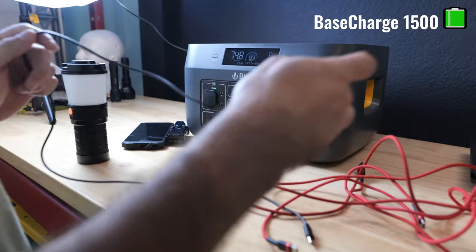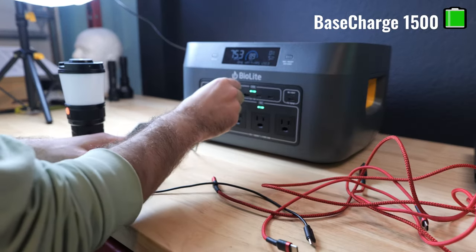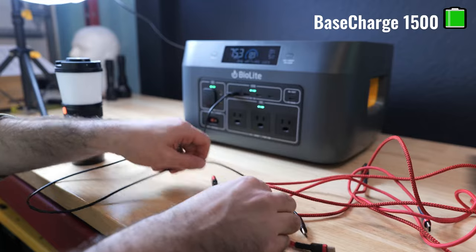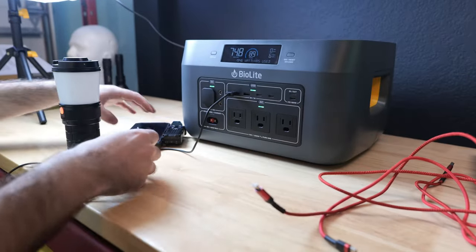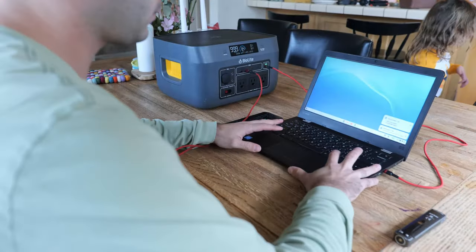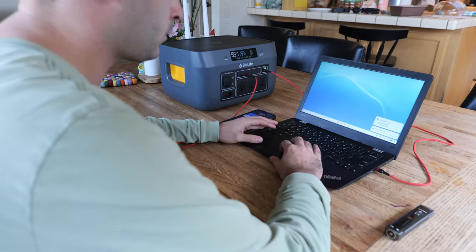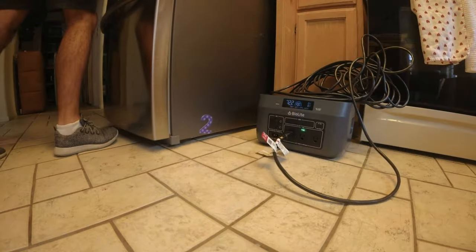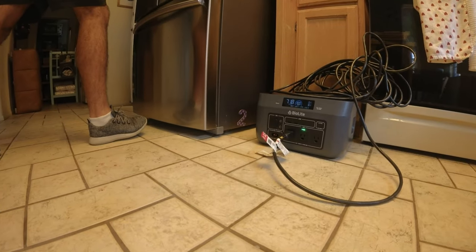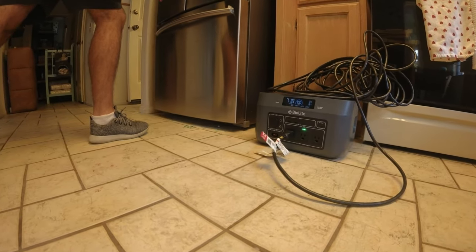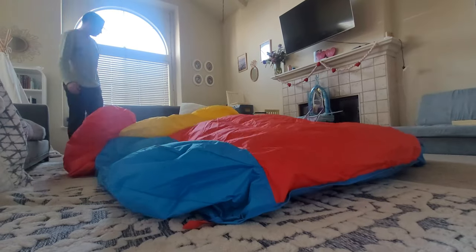The first item in the kit is the base charge 1500 and this is a 1521 watt hour capacity power station and it's got a bunch of different USB outputs which are good for charging your smaller devices like your phone and also some AC outlets which you can use to power most household items. I did do a full review on this power station a few months ago and if you want to learn more about the specs on this device and what it's capable of that video will be linked down below.